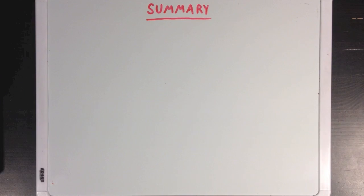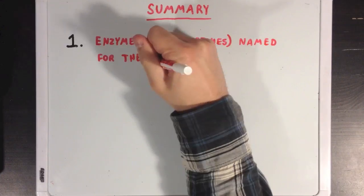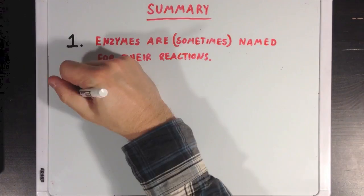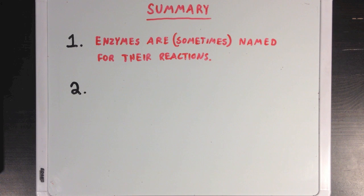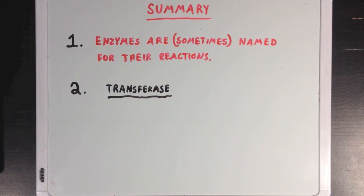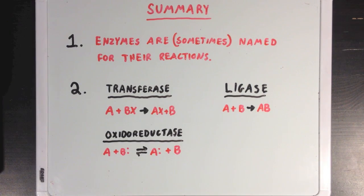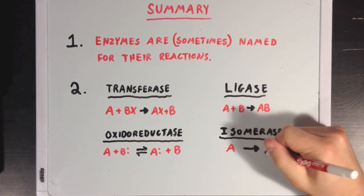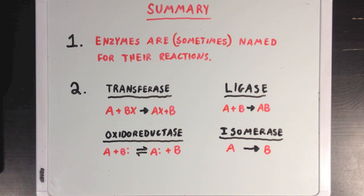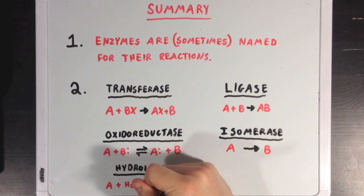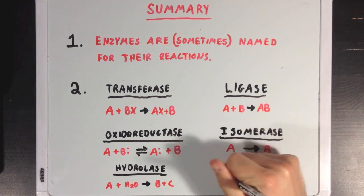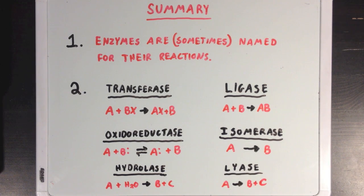So what did we learn? First, enzymes are sometimes named for their reactions. Next, we learned about the six different types of enzymes: transferases, which transfer functional groups from one molecule to another; ligases, which ligate or join two molecules together; oxidoreductases, which move electrons between molecules; isomerases, which convert a molecule from one isomer to another; hydrolases, which break bonds using water; and lyases, which break bonds without using water and without using oxidation.